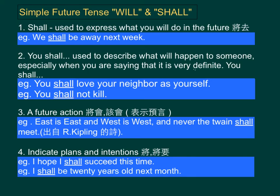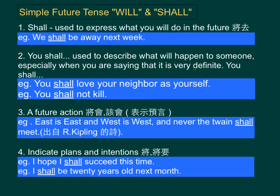Number three: we use shall to indicate a future action, often a forecast or a prophecy. For example, east is east and west is west, and never the twain shall meet. Number four: we use shall to indicate plans and intentions. For example, I hope I shall succeed this time, or I shall be twenty years old next month.